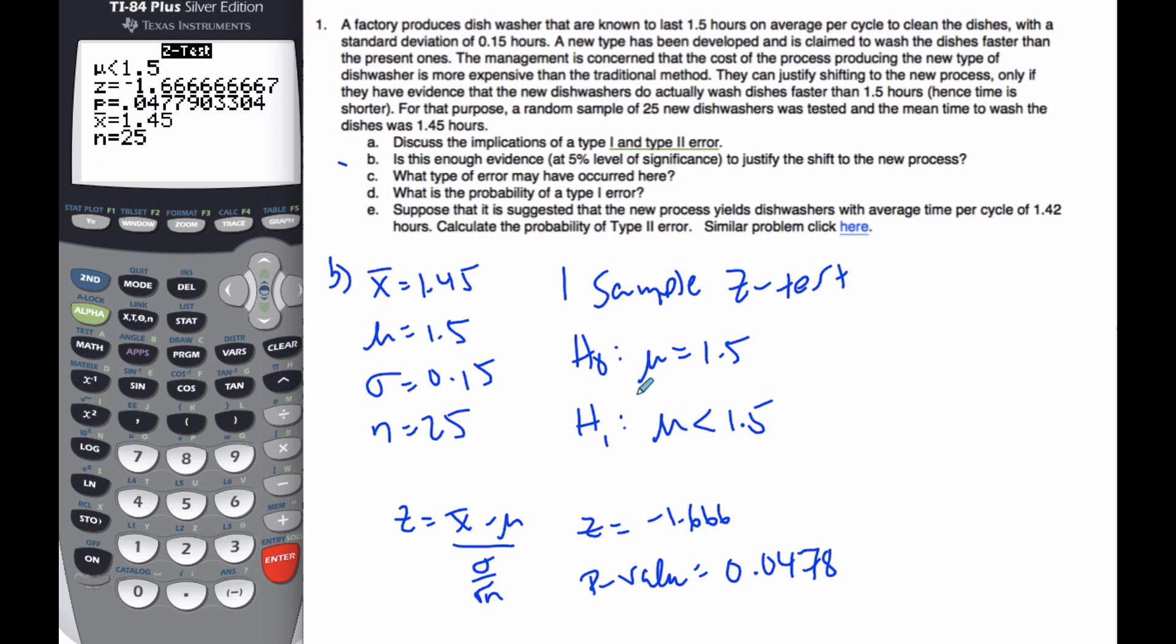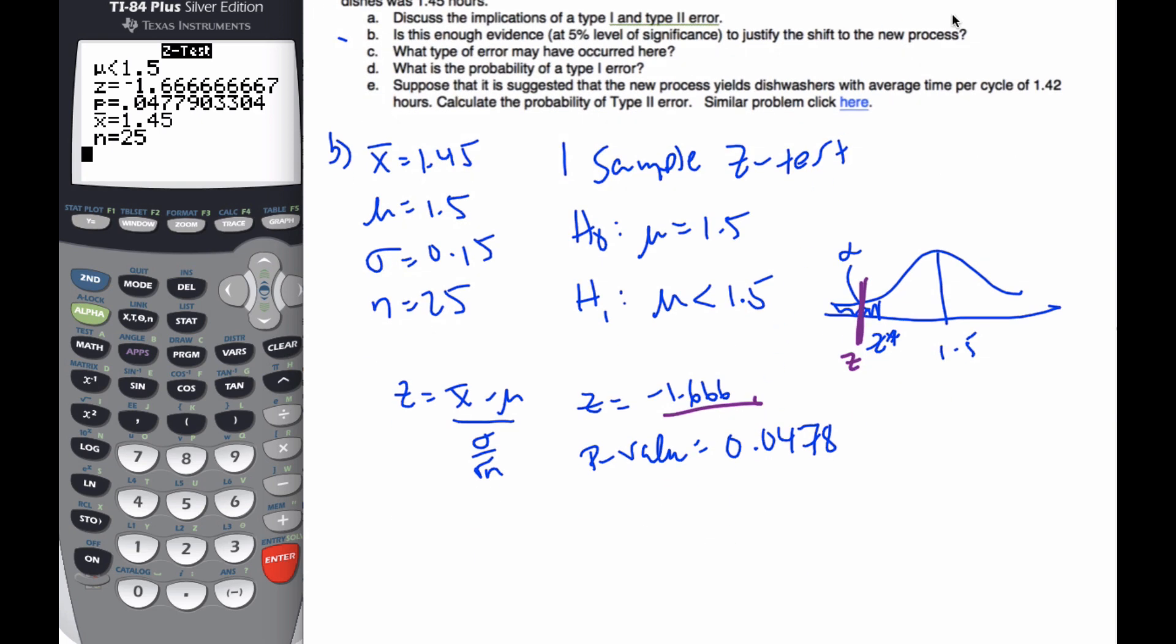So based upon that, and I have my normal curve here. Here is 1.5. This is alpha z star. My particular calculation is here. Here is z. It is in the critical region. I like to think about the p-value is less than alpha. It's small. P-value is small. Therefore,